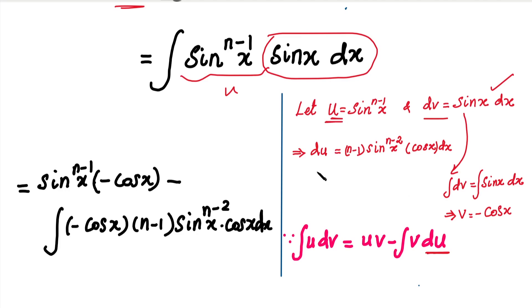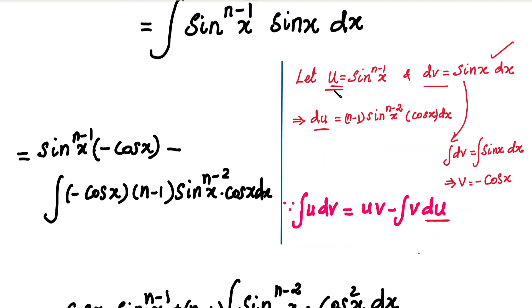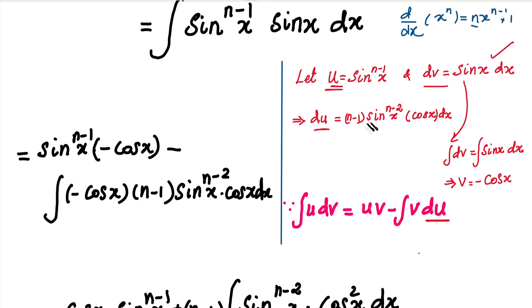So, in this function, u = sin^(n-1)(x). We will differentiate it with respect to x. Differentiating gives us n minus 1 into sin^(n-2)(x) into cos(x).